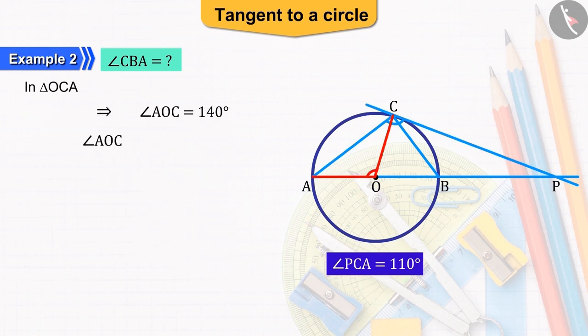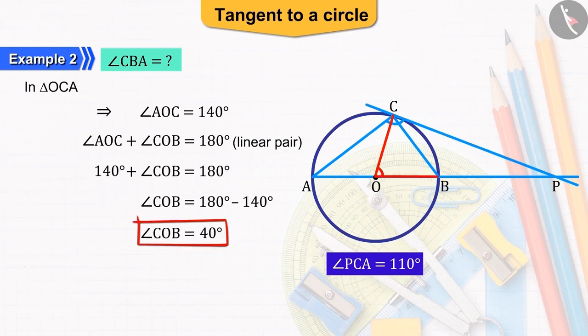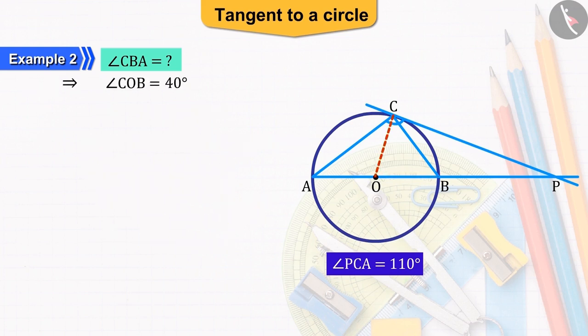Also, the angles AOC and angle COB form a linear pair. So, the angle COB will be equal to 40 degrees.